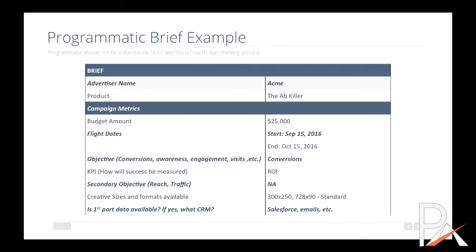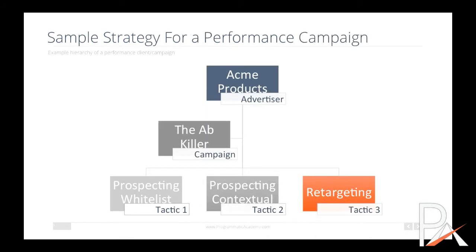A brief — whether you're working with clients or you're a brand reaching out to your marketing team — is essential. It will guide you in knowing whether your campaign is working or not. This is a sample strategy I created showing how a performance campaign strategy hierarchy would look. At the top we have the advertiser — in this case, Acme Products — the campaign, and the product, which is the AB Killer.